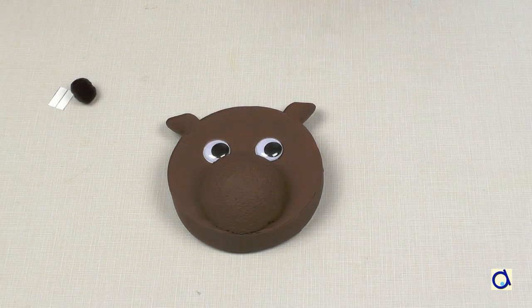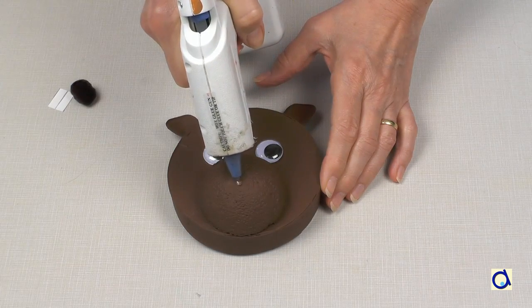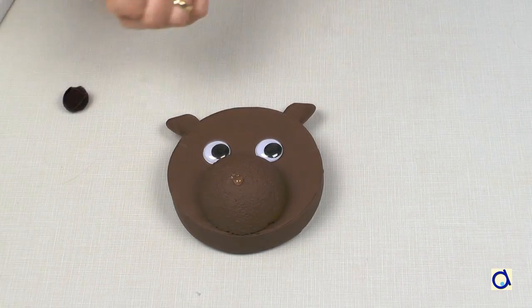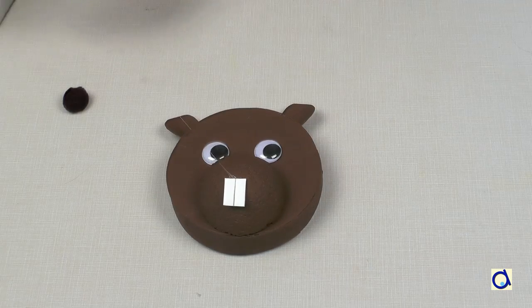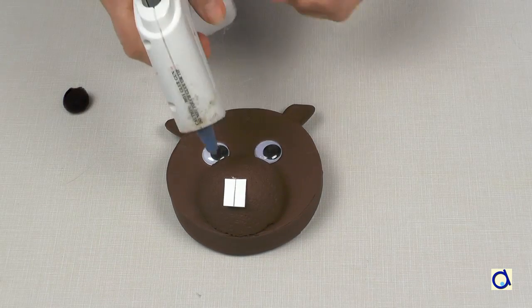Take the pattern of the teeth and draw them on white construction paper. Cut out the teeth. Then, put a dot of hot glue on the snout and glue the teeth in place.